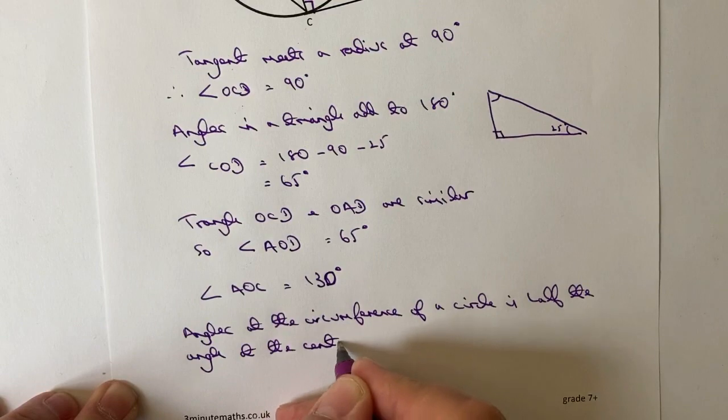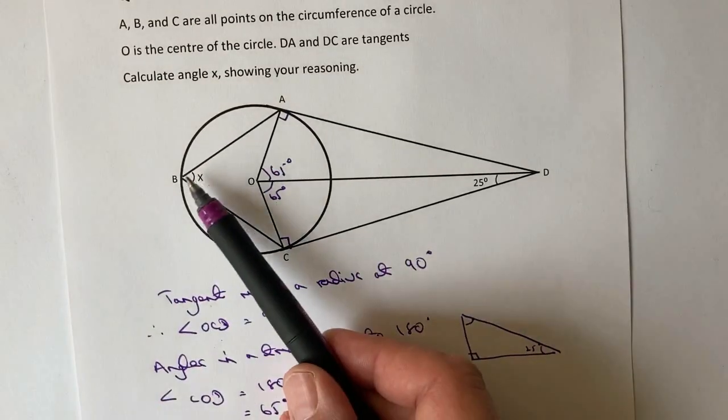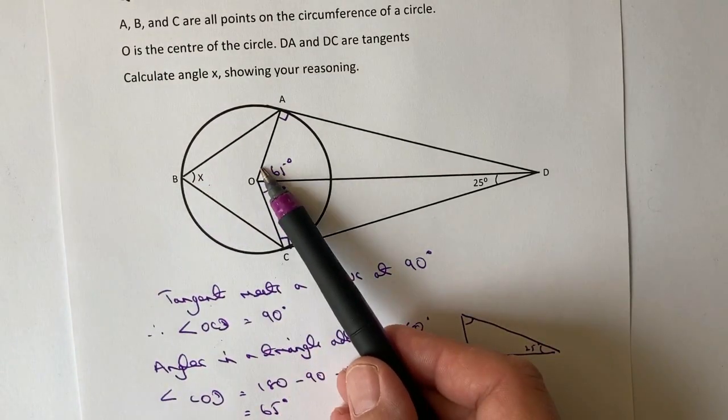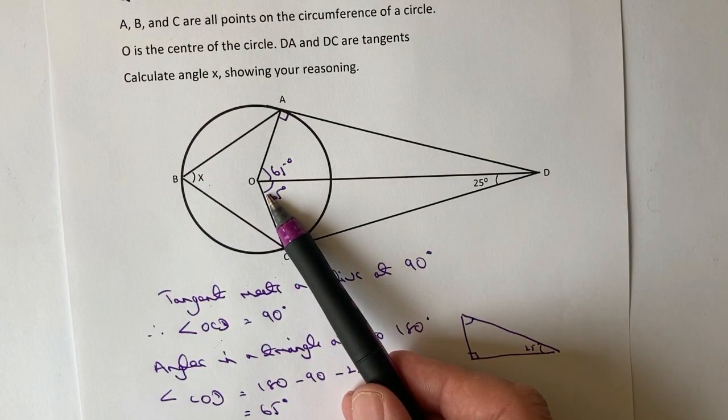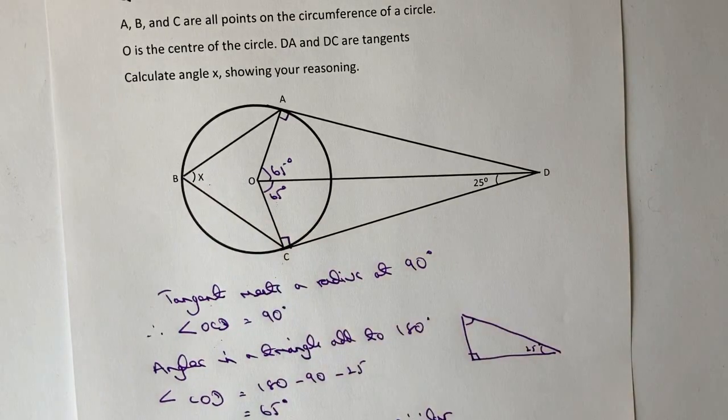Okay, so that's a terrible bit of writing there, but what we basically mean is that the angle here is going to be half the angle here, so if this is going to be 130 degrees, it's going to mean that angle ABC is going to be half that, which is going to be 65 degrees.